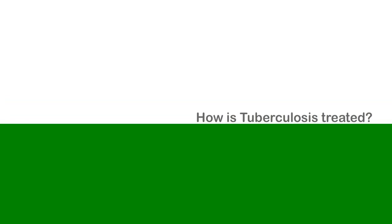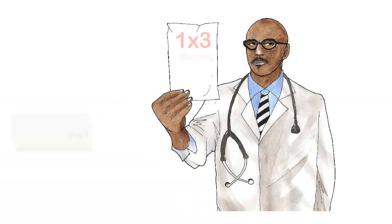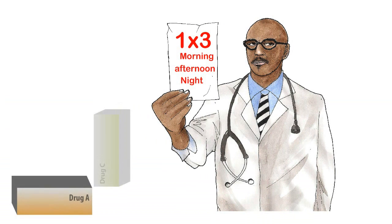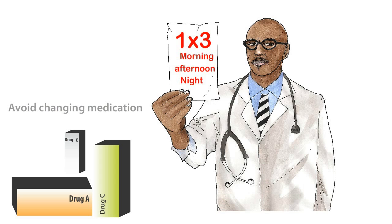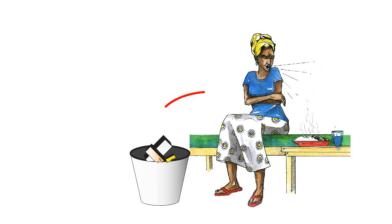How is tuberculosis treated? Tuberculosis is treated when a qualified health worker prescribes medication which needs to be taken exactly as directed to be effective in curing tuberculosis. It is important to note that one should avoid changing medication. Patients should also be monitored to ensure that medicine is taken accordingly and not thrown away, or else the disease will not cure.